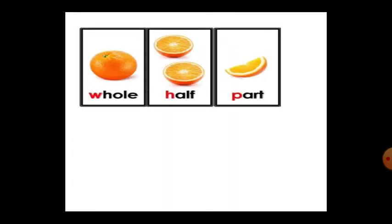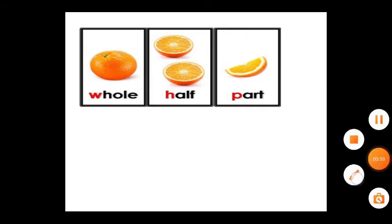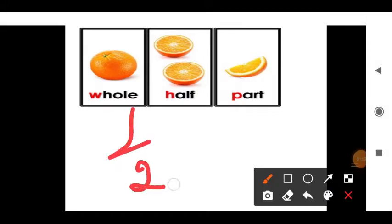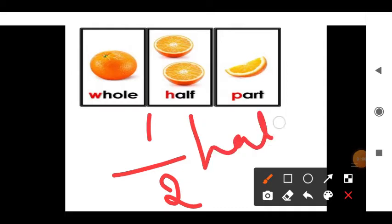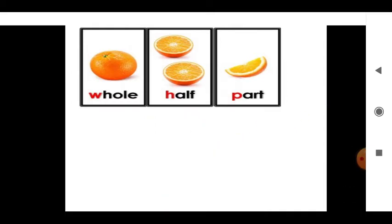See whole — you can see a whole orange in the first picture. The second picture shows the whole divided into two equal parts. Two equal parts means half. The orange is divided into half. So half is written as one by two. See, this is called half. It is one part.